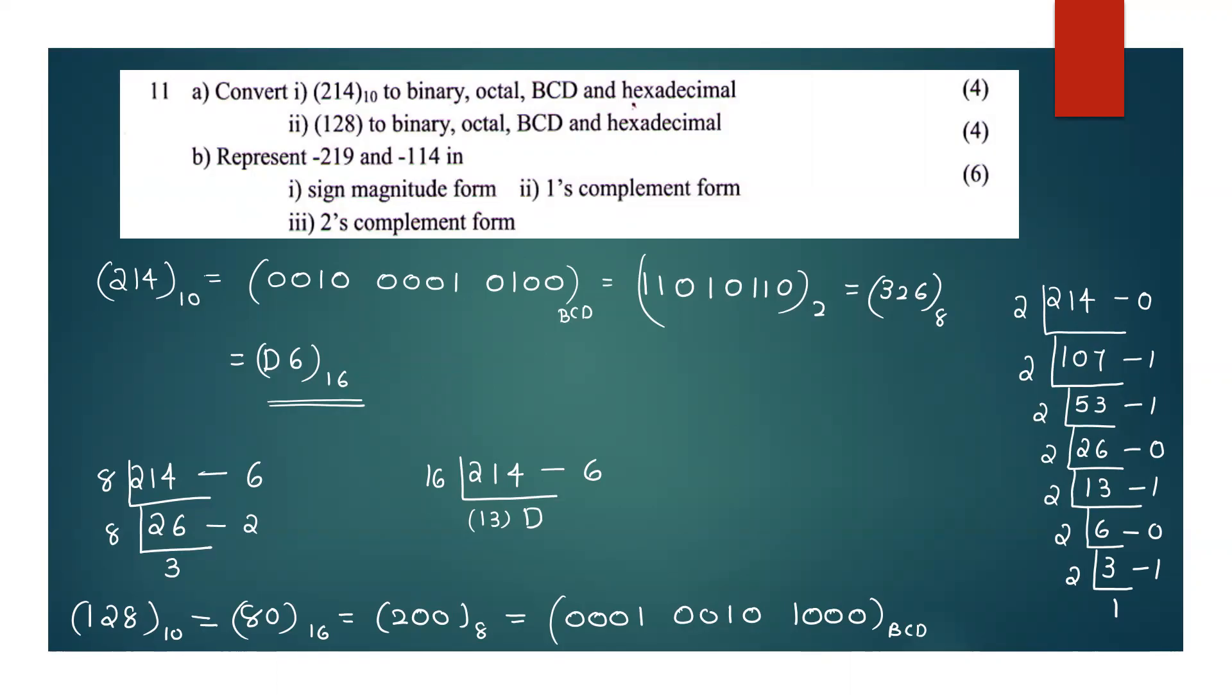In the next question, represent minus 219 and minus 114 in sign magnitude form, one's complement form, two's complement form. Now, minus 219 is represented. First step, sign magnitude form. Negative.